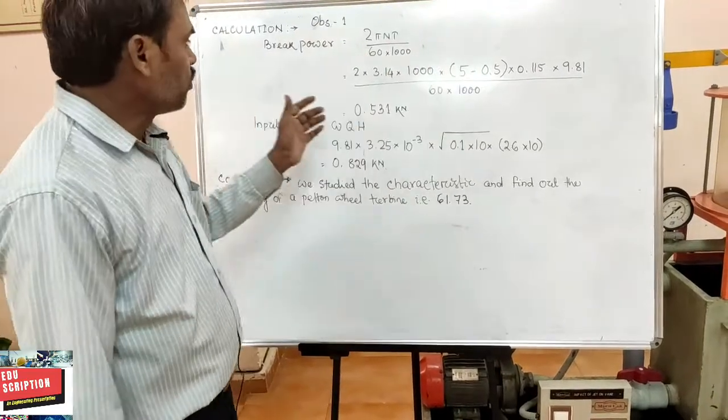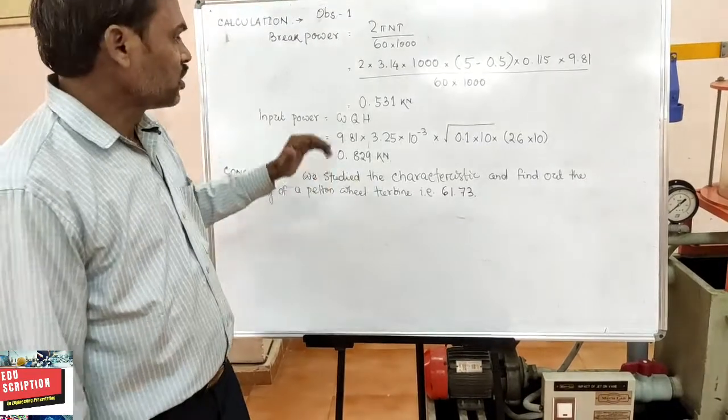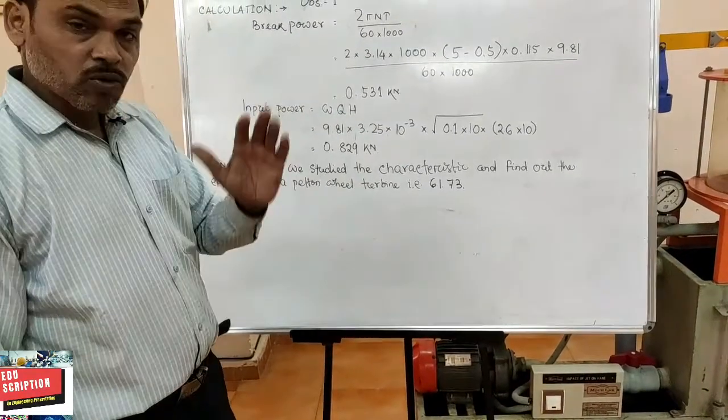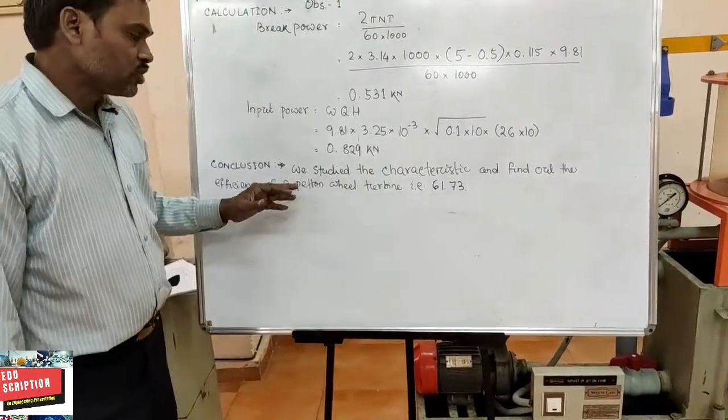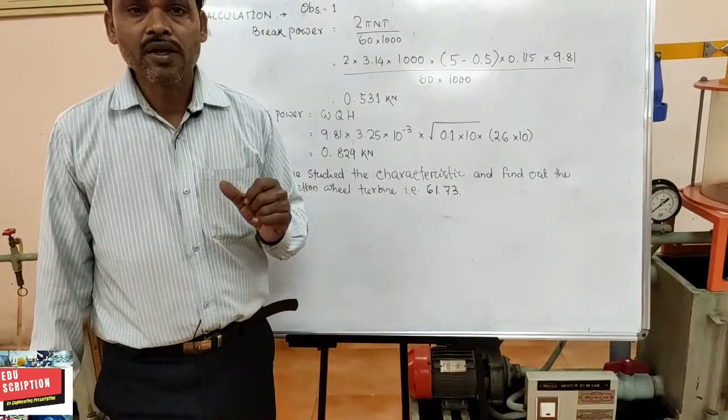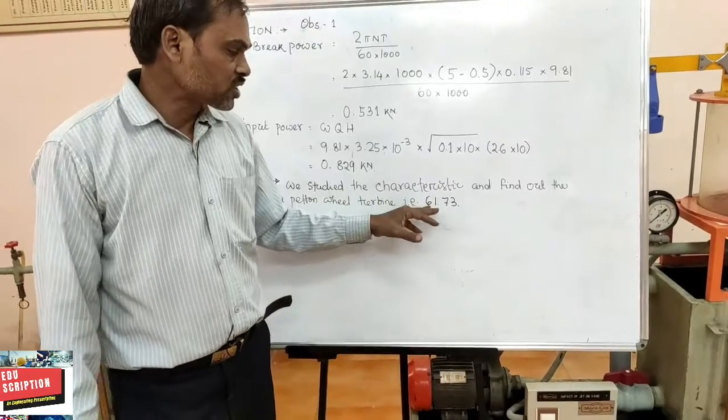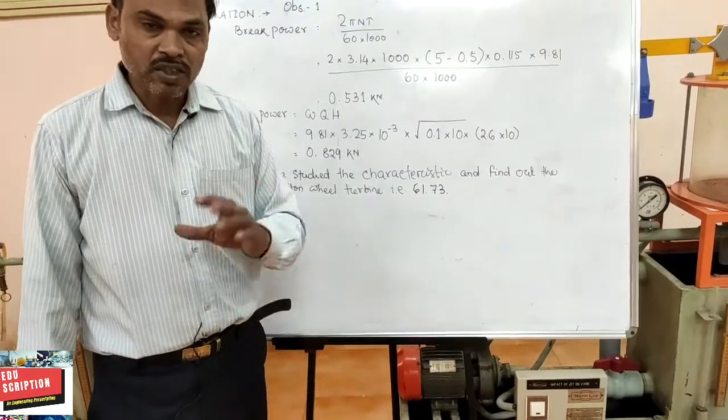Finally, the conclusion part is to study the different parts and function of a Pelton wheel turbine and find out its efficiency is 61.7%. Thank you.